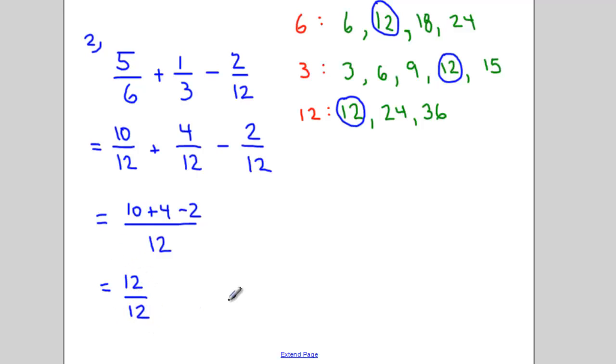I'm left with the fraction 12 over 12, which if I reduce it, if I divide the top and the bottom by 12, I get 1 over 1, which is just the number 1. So 5/6 plus 1/3 minus 2/12 is equal to 1.